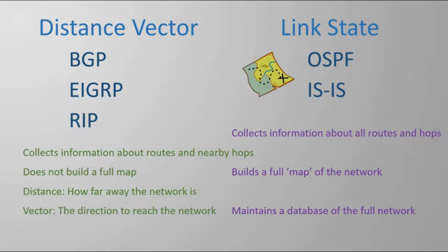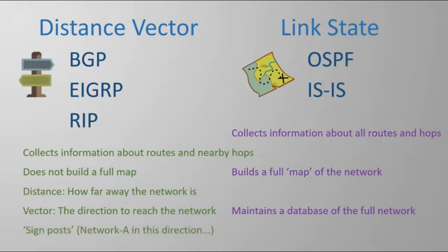In this example, the distance is how far away the network is, and the vector is the direction the network is in — that's how we get the name distance vector. This makes distance vector routing protocols less like a map and more like signposts pointing the way. If a router gets an update for the same network from two different neighbors, it will look at the distance and use the path it thinks is better.